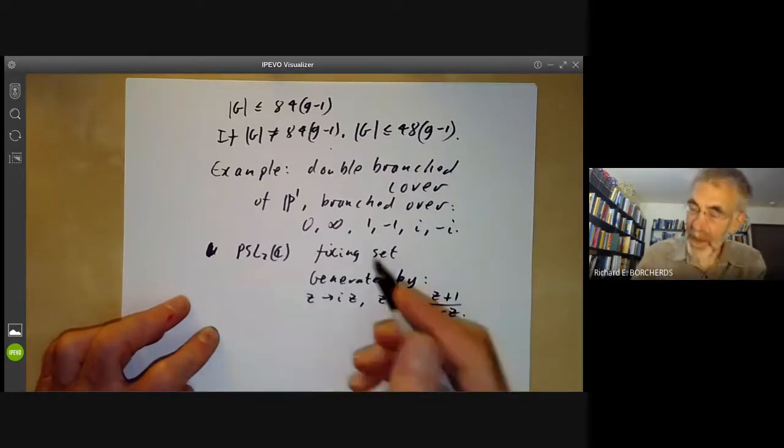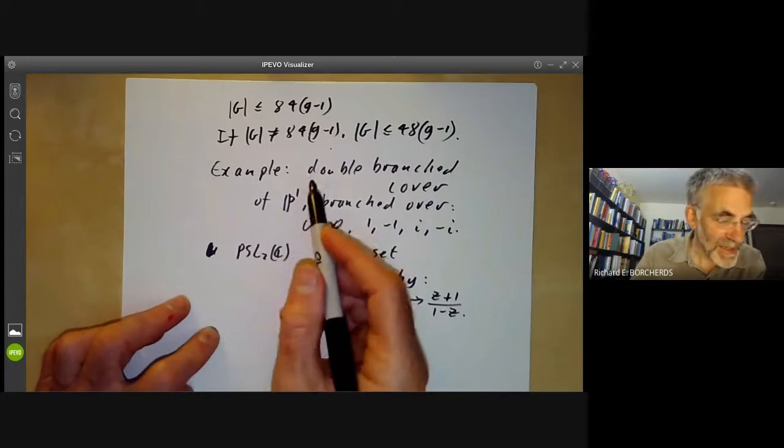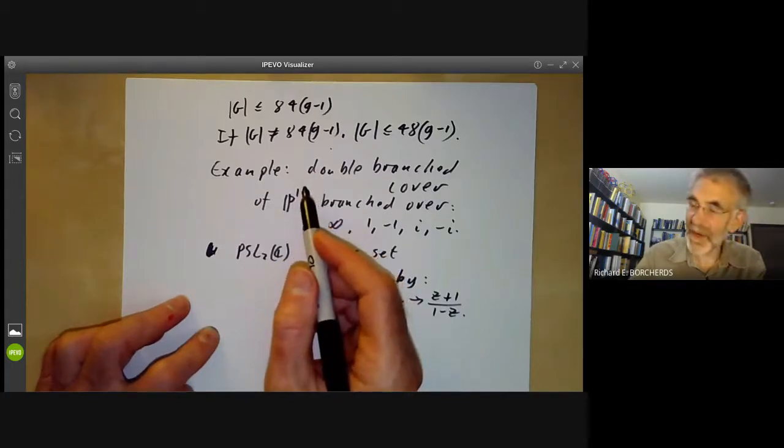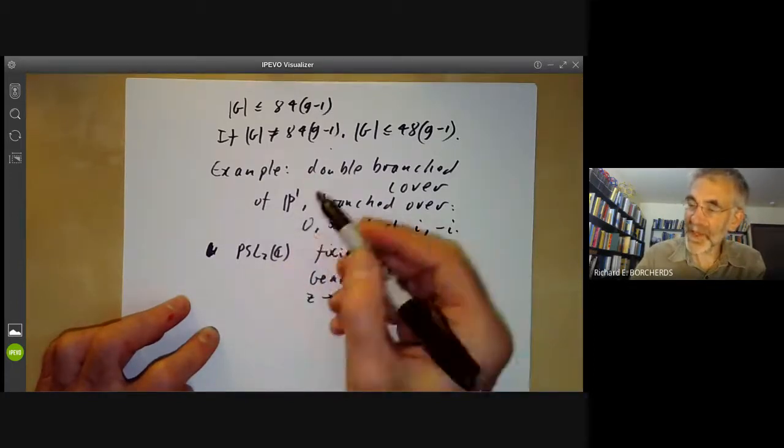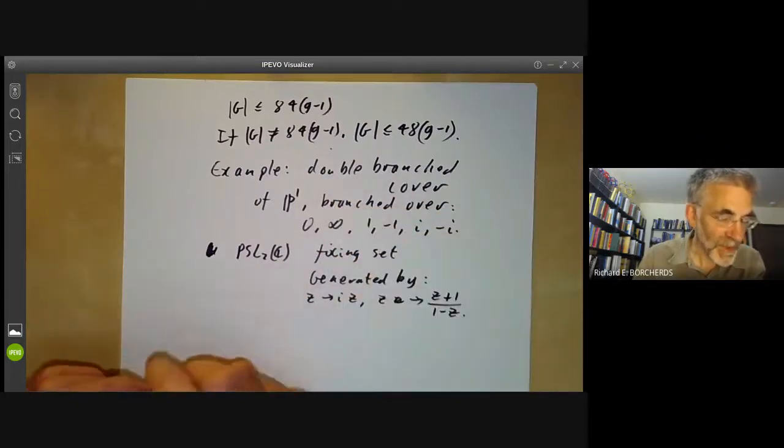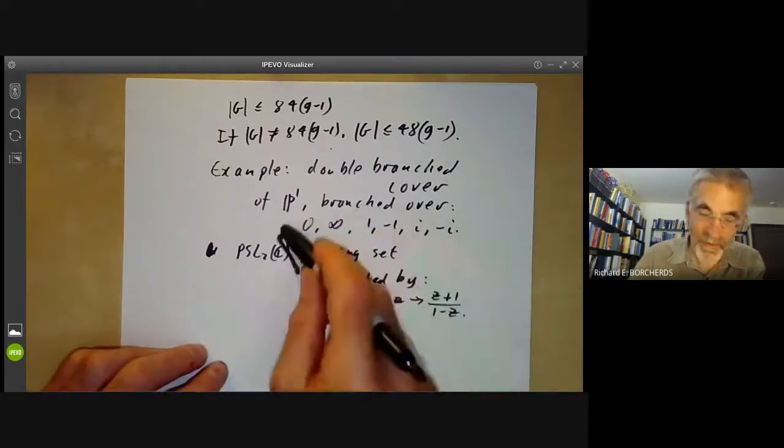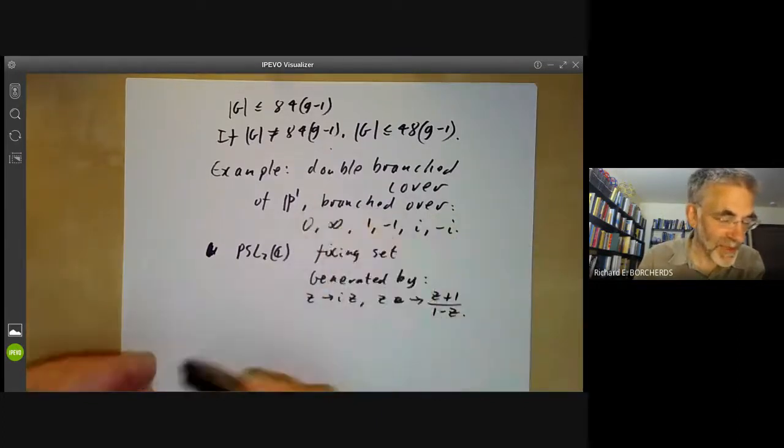The full group of automorphisms is a central extension of this, where the center exchanges the two branches, and so all together we get a group of order 48 acting on this hyperelliptic curve.